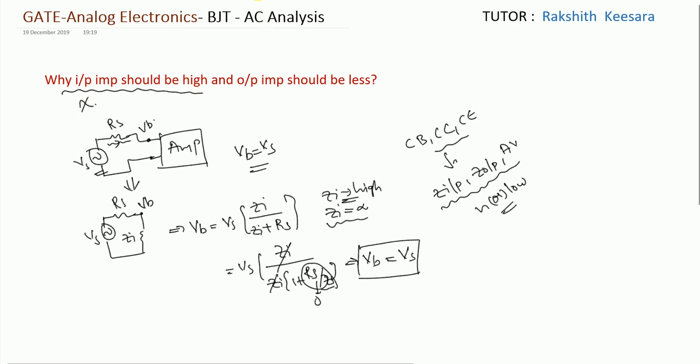Next, while coming to the output side, let this be output impedance Rout, and this is our load resistance RL. Our amplified signal will come here. We need the same signal at the load resistance. If output resistance is very high, the signal is dropped here, so we won't get the whole signal. If output impedance is very low, there is very less drop across output impedance, so we will get the most part of the signal.